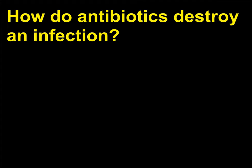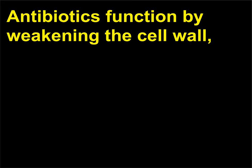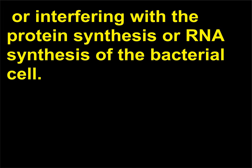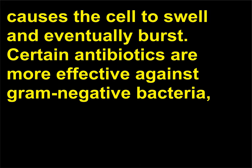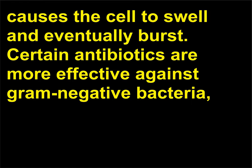How do antibiotics destroy an infection? Antibiotics function by weakening the cell wall, or interfering with the protein synthesis or RNA synthesis of the bacterial cell. For example, penicillin weakens the cell wall to the point that the internal pressure causes the cell to swell and eventually burst. Certain antibiotics are more effective against gram-negative bacteria, while others are more effective against gram-positive bacteria.